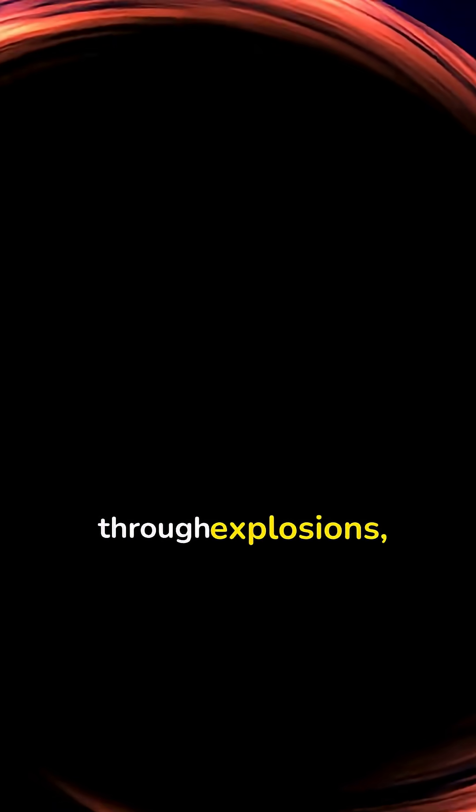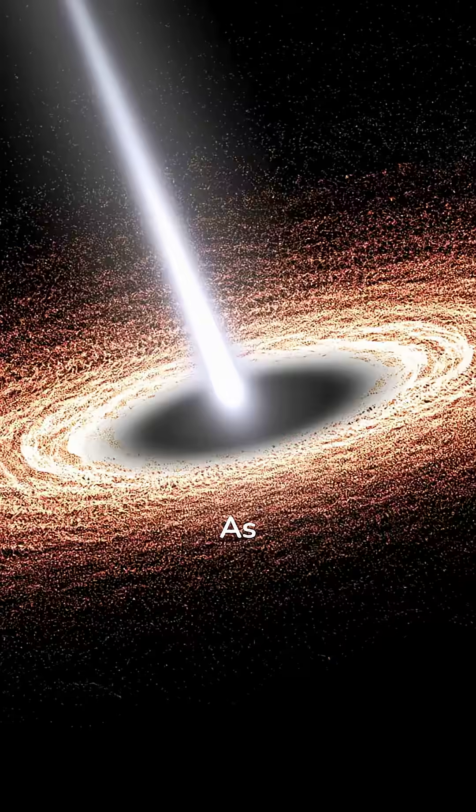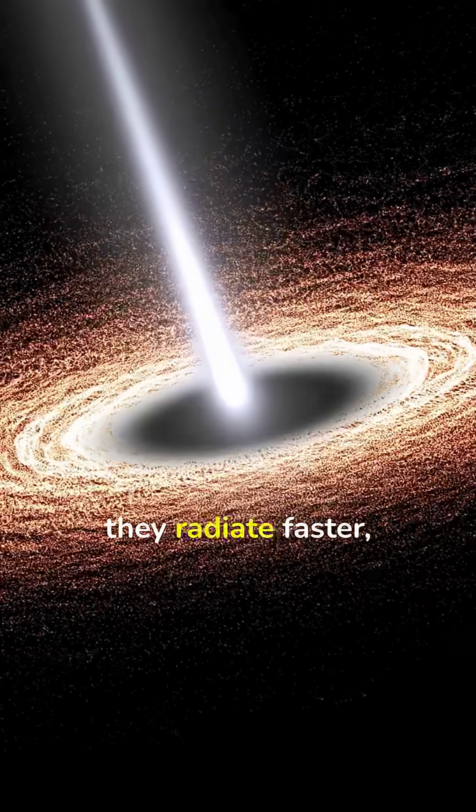Not through explosions, but through evaporation. Stephen Hawking predicted that black holes slowly leak energy, a faint glow called Hawking radiation. As they radiate, they shrink. As they shrink, they radiate faster.